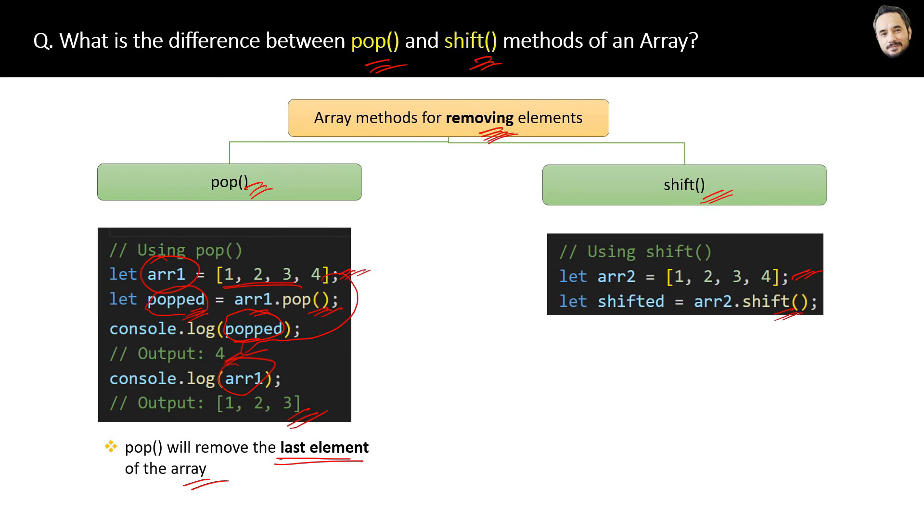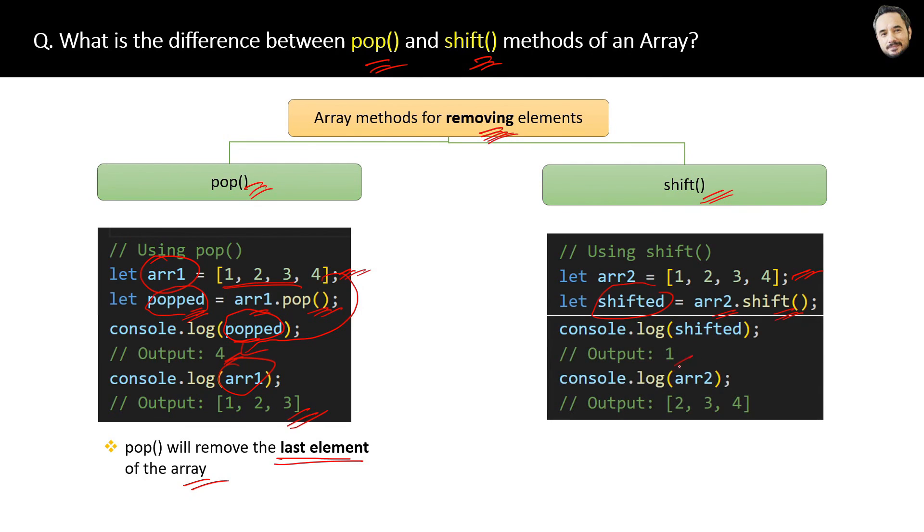In the result we will get the first element of the array. So when we printed the shifted number, it will be the first element which is 1 in this case.